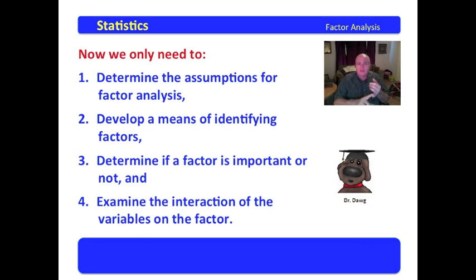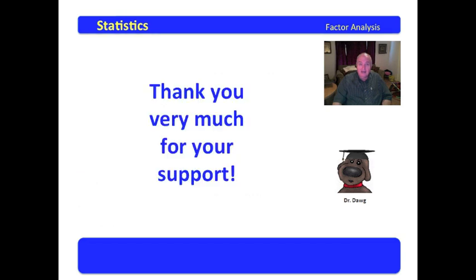Determine the assumptions of factor analysis, develop a means for identifying the factors, determine if a factor is important or not, and examine the interaction of the variables on the factor. Once you get these four things down with factor analysis, you can take a big data set, reduce it into the factors that determine it, examine those factors to determine which ones are truly important in explaining the variance, and then look at the independent variables in the factor to determine how they make the factor operate. That is really cool.